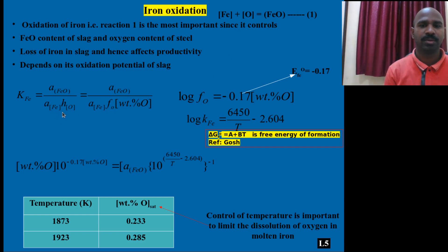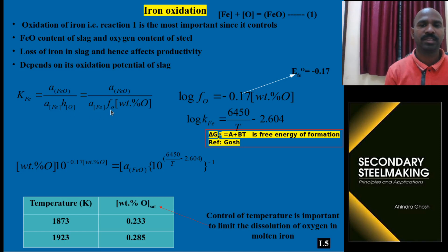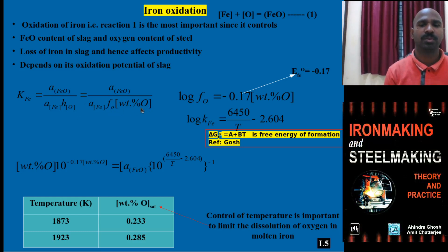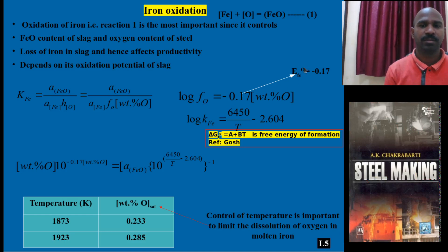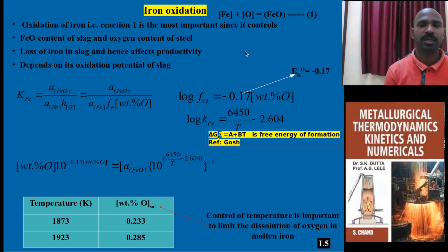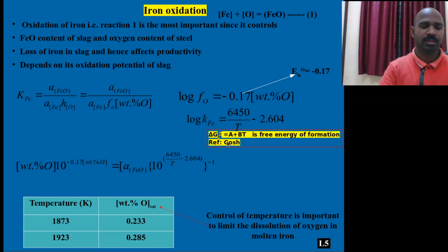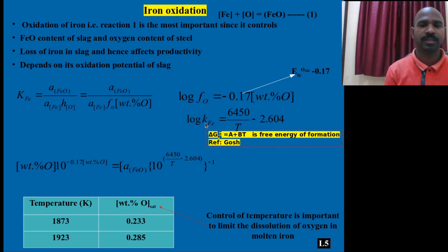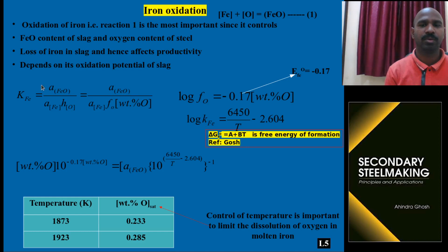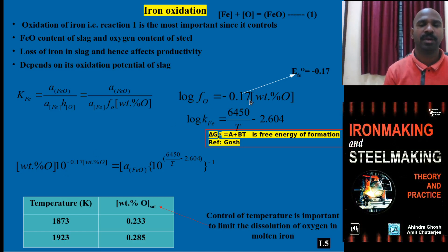The activity of FeO and Henry's activity of oxygen can be explained in terms of the Henry's activity coefficient and weight percentage of oxygen. Further, the FeO can be calculated with log of FeO and the interaction parameter of Fe with O. By substituting 0.1, you will get this result. These thermodynamic equations and free energy values in the form of A plus BT are available in the Gost textbook for reference. Finally, you can expand by applying the weight percentage of oxygen and 10 to the power of minus 0.07 times the weight percentage of oxygen.